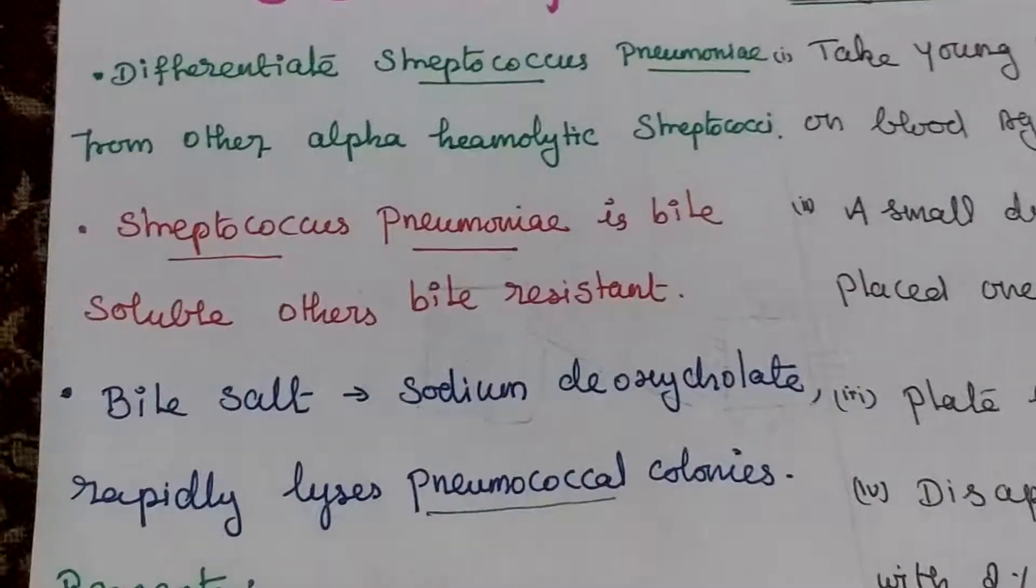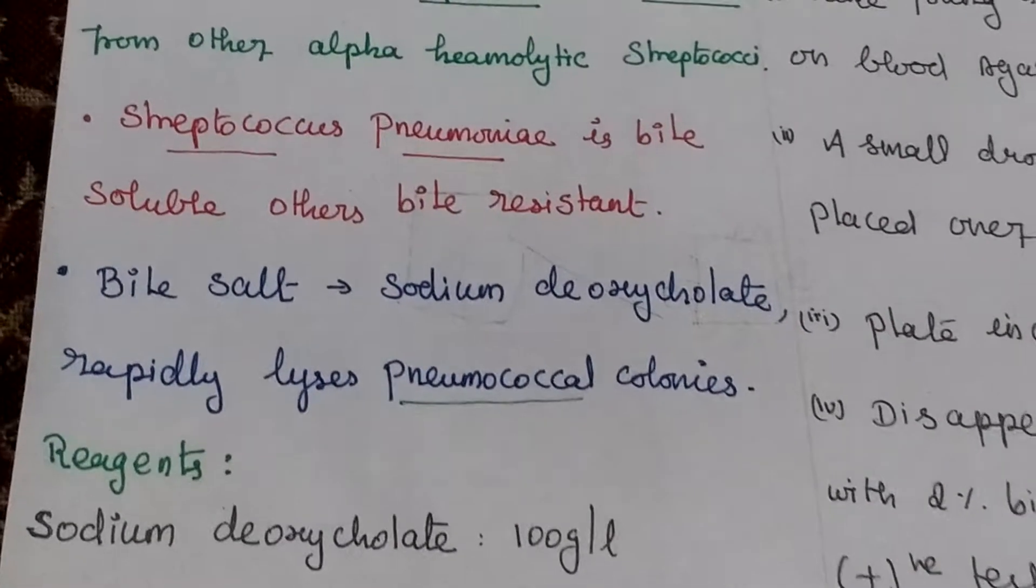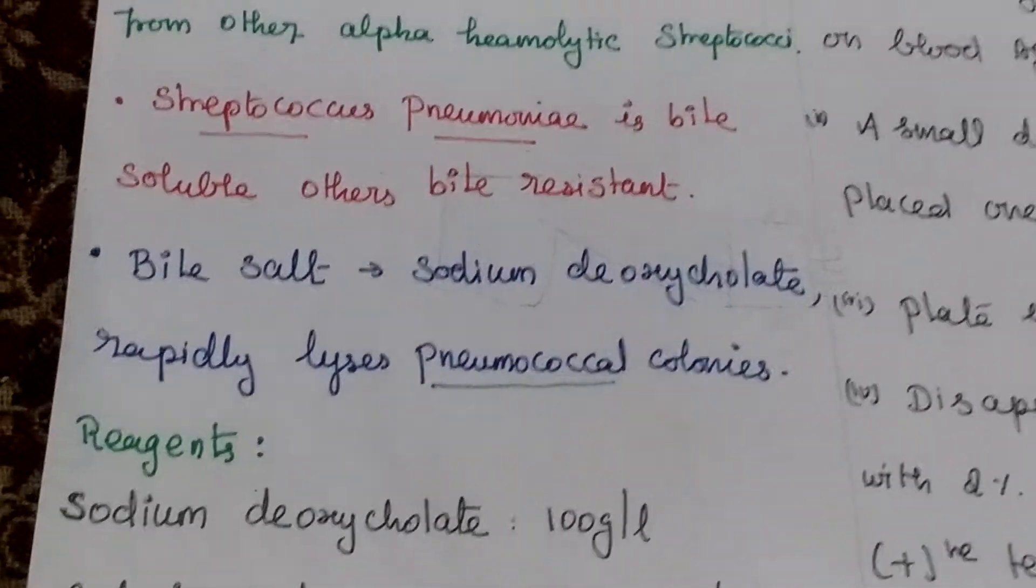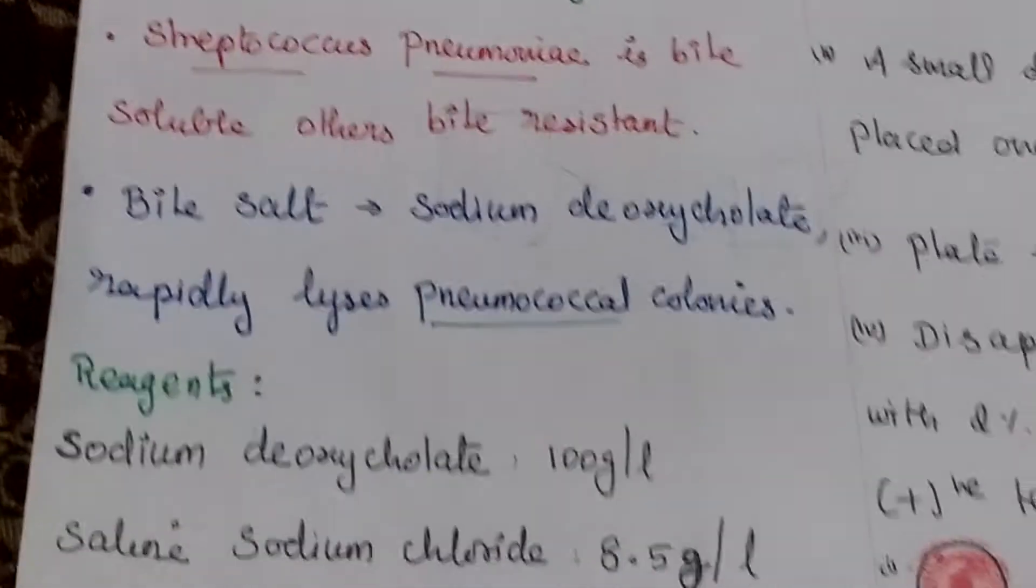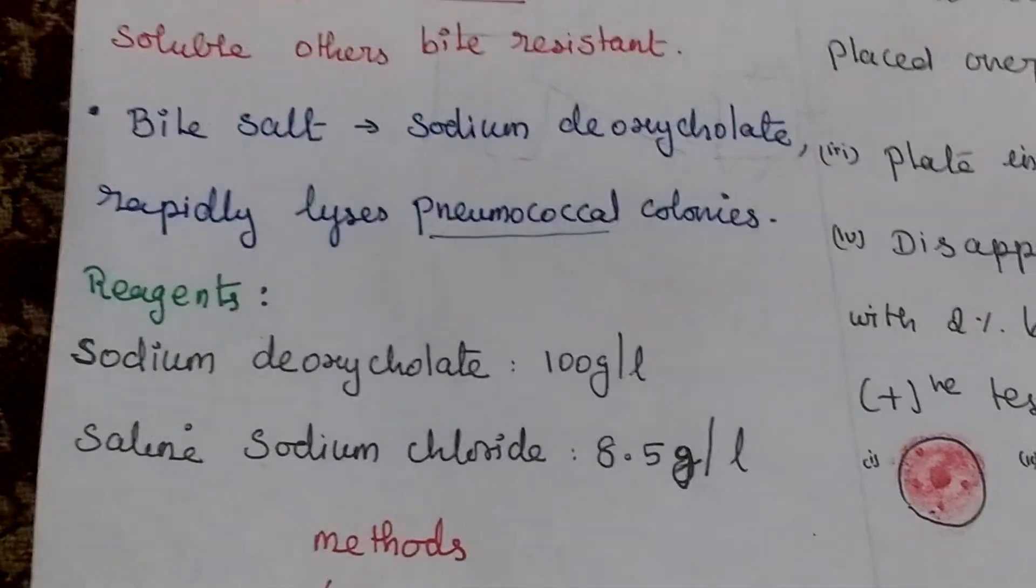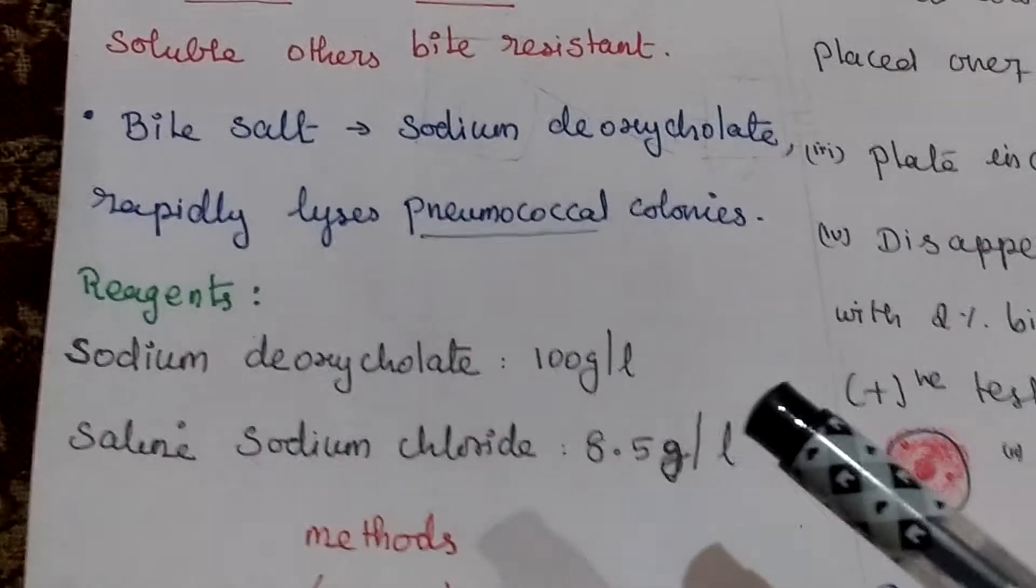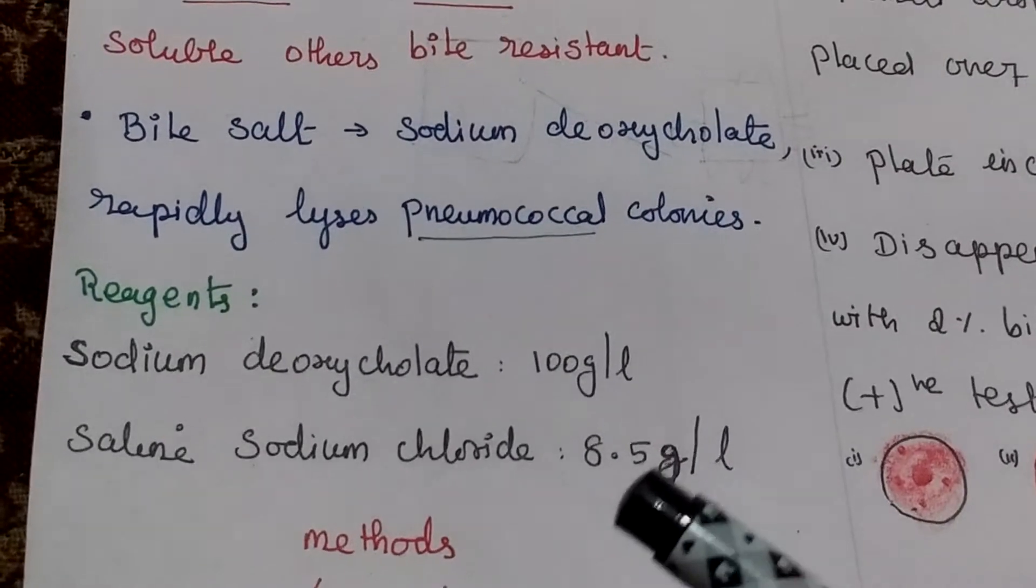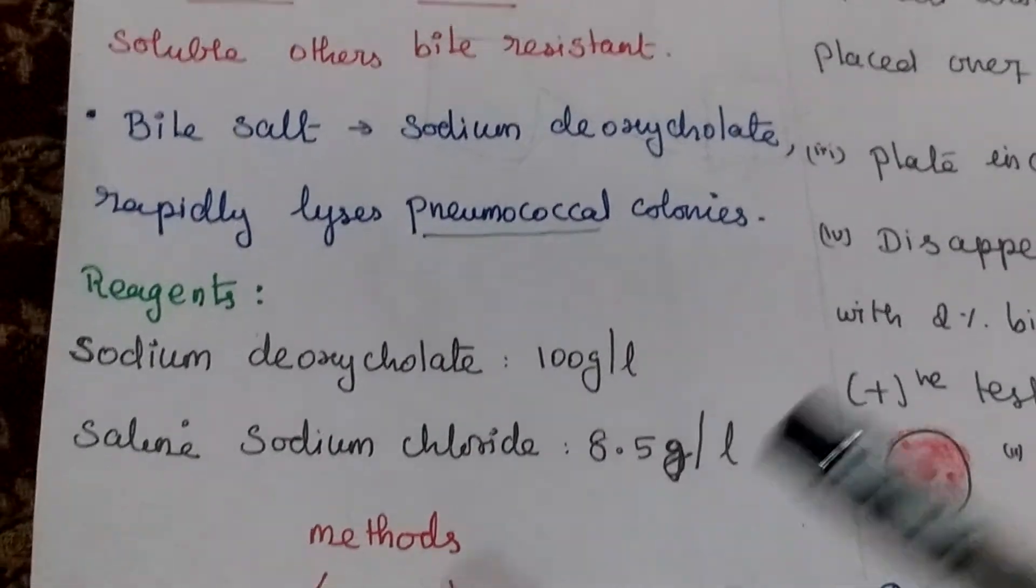The bile salt containing sodium deoxycholate rapidly lyses pneumococcal colonies. In this test we need two types of reagents: sodium deoxycholate 100 grams per liter, and saline sodium chloride 8.5 grams per liter.